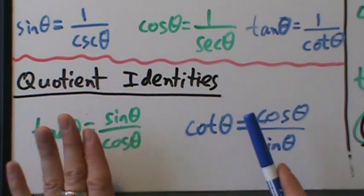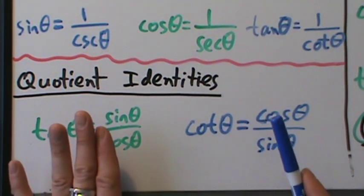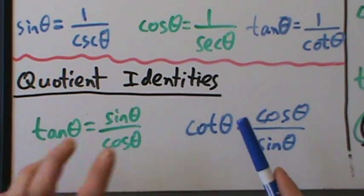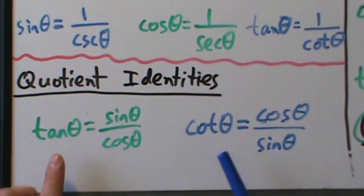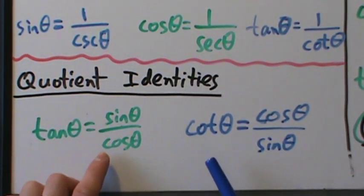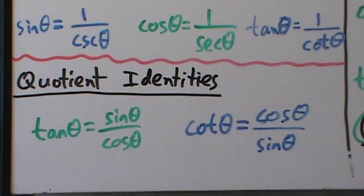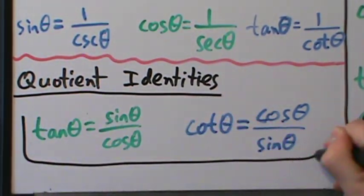There are a few different ways of expressing these, but they're most commonly expressed as: tangent equals sine over cosine, and cotangent equals cosine over sine. These are pretty important to keep in mind.